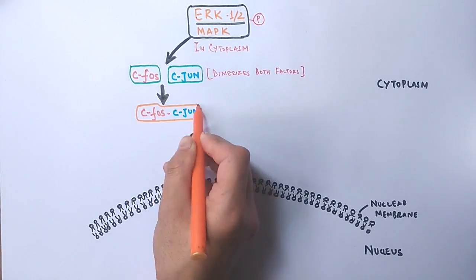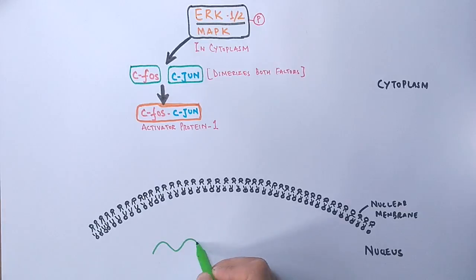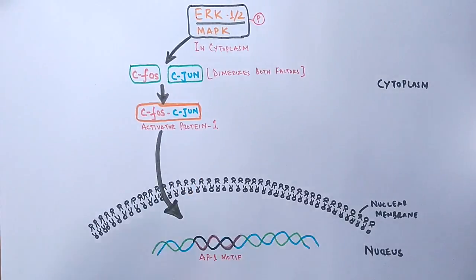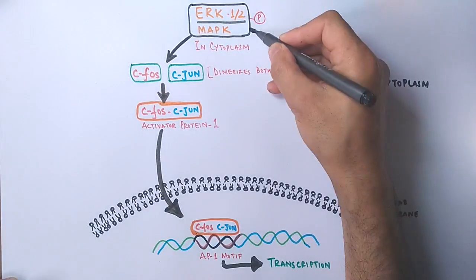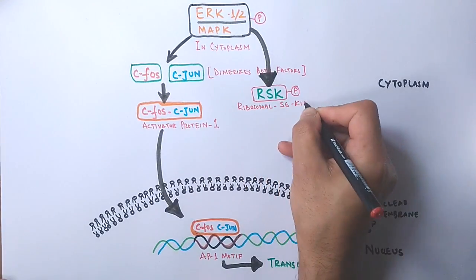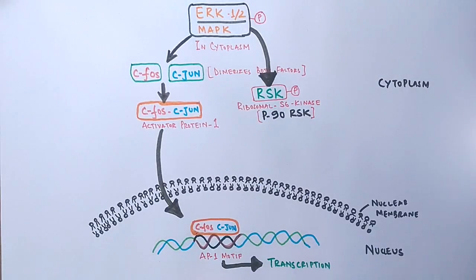And the dimerized molecule is now called activator protein 1. From here, this AP1 gets into the nucleus where it binds to the DNA molecule on its AP1 motif and initiates transcription. Another cytoplasm target of MAPK is the RSK, that's ribosomal S6 kinase.